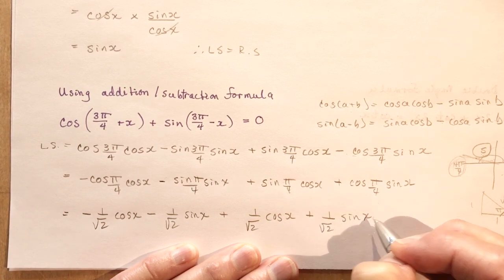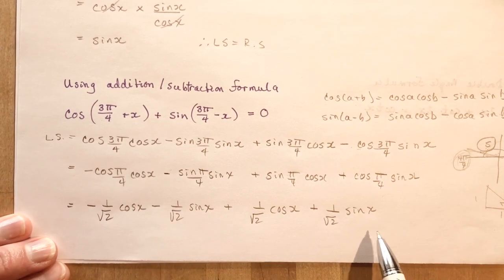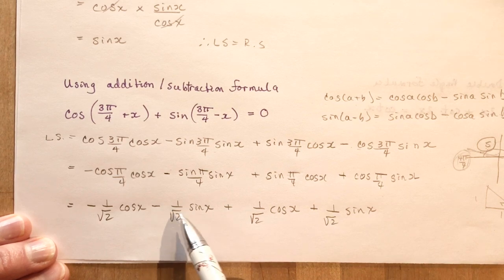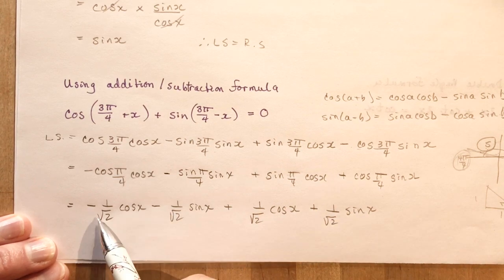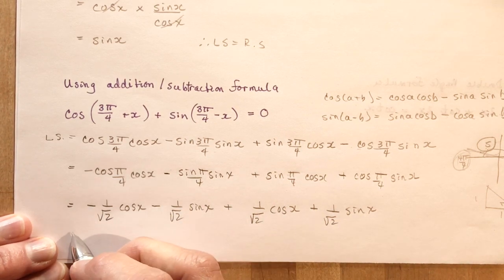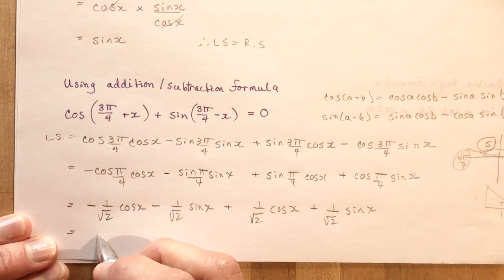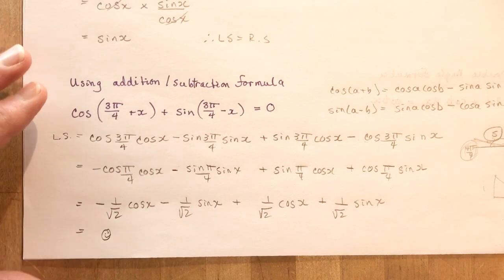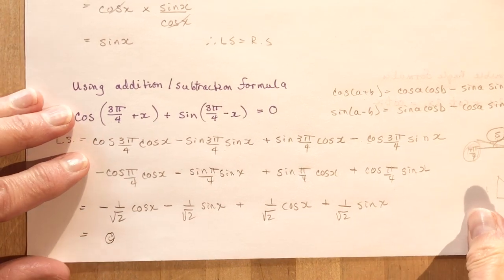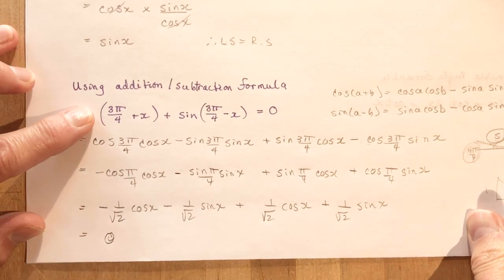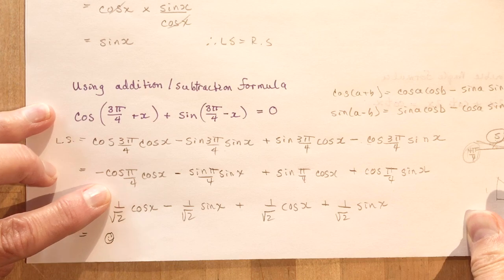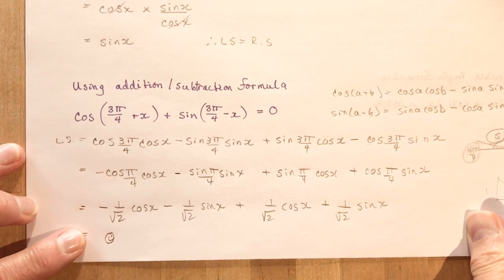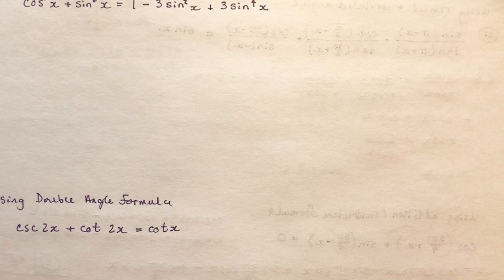There's no need to rationalize the denominator because each term has a corresponding opposite sign: negative, positive, negative, positive. They all add up to zero. That's the example using the addition/subtraction formula — finding the related acute angles first and then evaluating them.